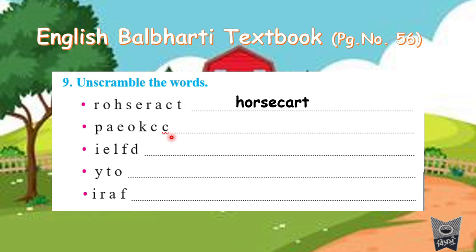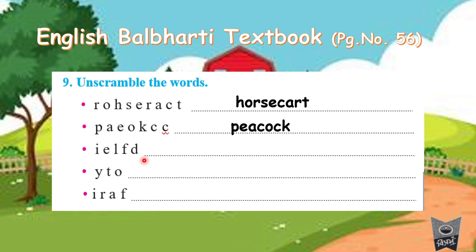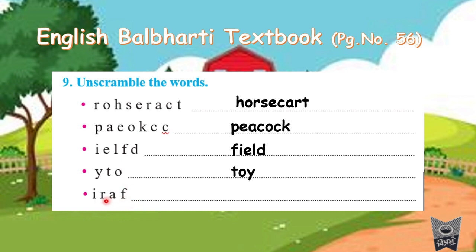Yes, you are right — it is 'peacock.' P-E-A-C-O-C-K, peacock. Write it down. Now look here — what is this? Yes, you are right, it is 'field.' F-I-E-L-D, field. Next — think! Yes, very good — T-O-Y, toy. Write it down in your textbook. And last — yes, it is 'fair.' F-A-I-R, fair.